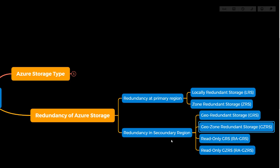There are also read-only variants: RA-GRS and RA-GZRS. The basic difference is that with standard GRS or GZRS you do not get any read access to your secondary copy of the data. But with the read-only versions, you get read-only access to the secondary copy, so you can verify what data has been synced.